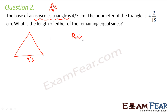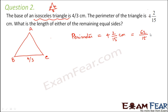Now, do you know what perimeter is? Perimeter is nothing but the boundary. So the boundary of the triangle means the entire length — AB plus BC plus CA. The perimeter is given as 4 and 2/15 centimeters, which equals 62/15 centimeters. Let us assume that the length of the remaining equal sides is x, so both equal sides are x.